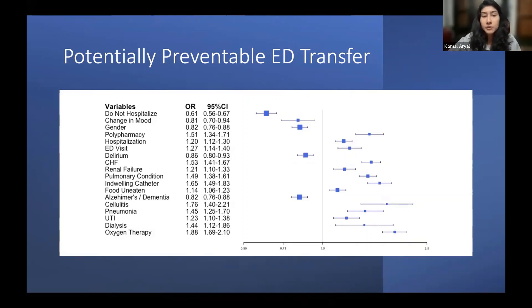Resident characteristics associated with a greater risk for a PPED transfer were pneumonia, which has a hazard ratio of 1.48, and oxygen therapy with a hazard ratio of 1.88.